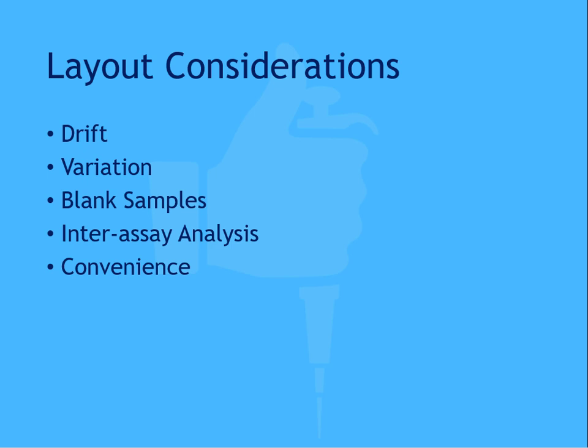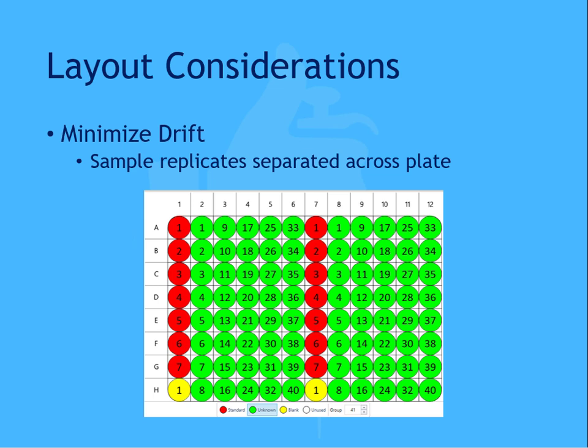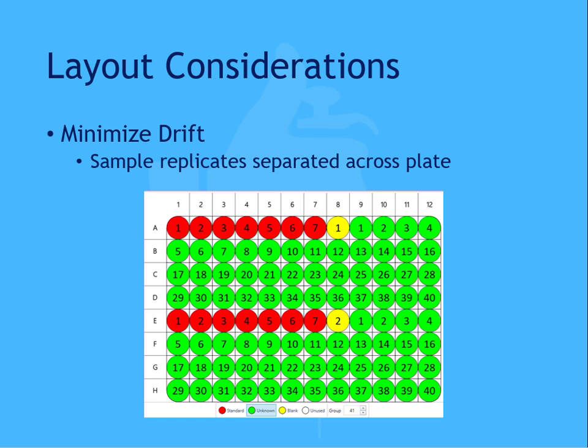To minimize drift, it may be helpful to run multiple replicates separated across the plate. This way, the drift will be normalized as the replicates are averaged to report the final result. When selecting how the replicates will be separated, consider how reagents are added across the plate. For this example, samples and reagents are added by column, moving from column 1 to column 12. However, if your samples and reagents are added in a different manner, perhaps by row moving from A to H, this may be a more appropriate layout to minimize the impact of drift.